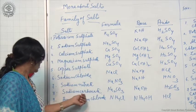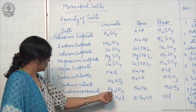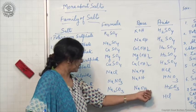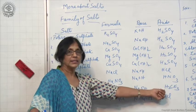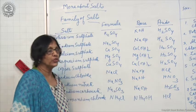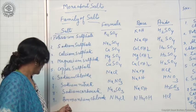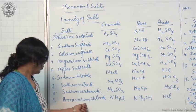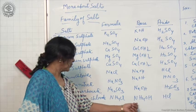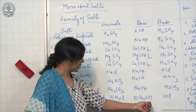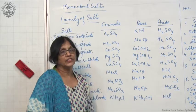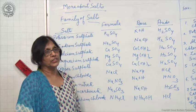Sodium carbonate: formula is Na₂CO₃, base is NaOH and acid is H₂CO₃. Ammonium chloride: formula is NH₄Cl, base is NH₄OH and acid is HCl.